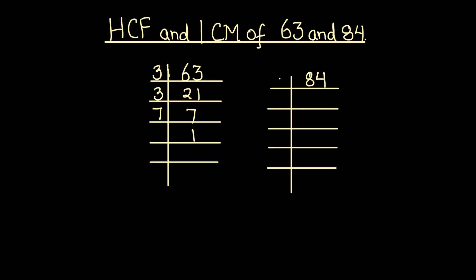Now let's divide 84, it is an even number, it is easily divisible by 2. 2 times 4 is 8, 2 times 2 is 4, 2 times 2 is 4, 2 times 1 is 2.